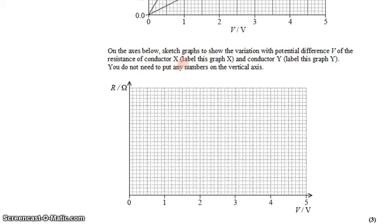On the axes below here, we're going to sketch graphs to show the variation with the potential difference V of the resistance of conductor X and the resistance of conductor Y. We don't need to put any labels on the vertical axis, we just want the relative shapes.